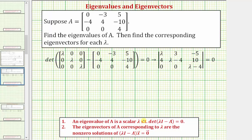We'll first find the eigenvalues. So we have the determinant of the difference of lambda times I, where I is the three by three identity matrix, minus the given matrix A equals zero. Performing this matrix subtraction gives us this determinant, where this determinant must equal zero.